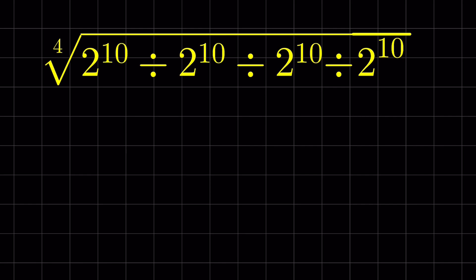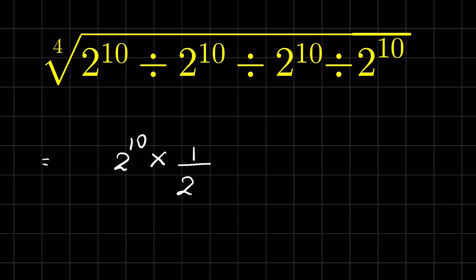2 raised to the power 10 divided by 2 raised to the power 10 divided by 2 raised to the power 10 — how to simplify this. When we have division, we can convert it into multiplication, and the number after that gets inverted. So 2 raised to the power 10 becomes its reciprocal: 1 upon 2 raised to the power 10.